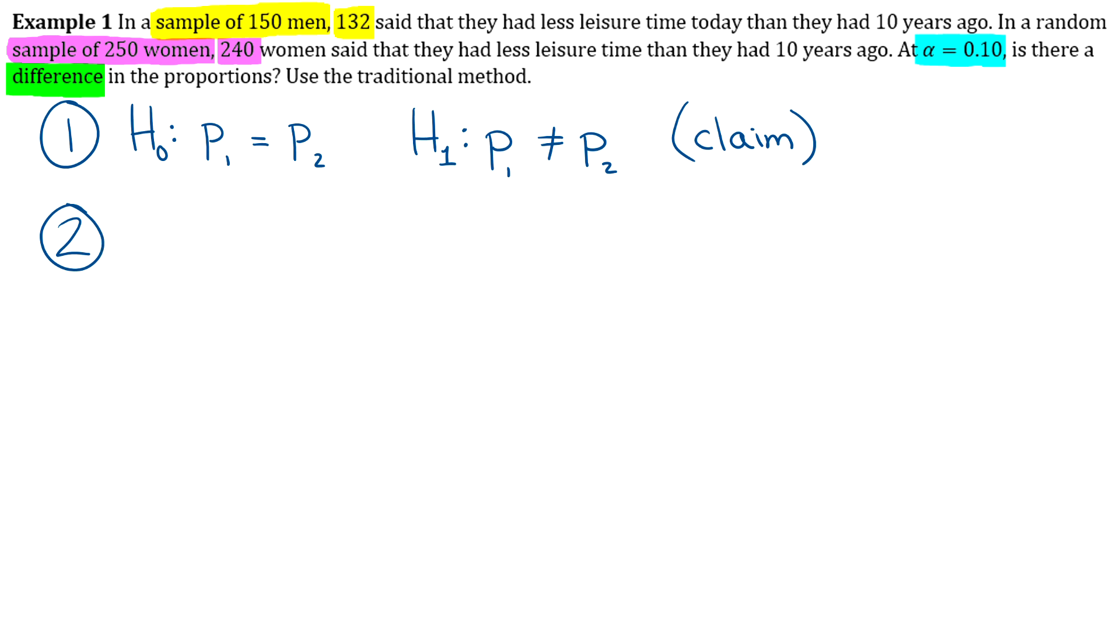Step 2, we need to get our critical values. So you just look at your level of confidence. Alpha is 0.1, and then you look at what tailed test it is. Since it's a not equal to sign in the alternative, this is a two-tailed test. If you go look at that list of common critical values, you'll see that we have two of them: plus or minus 1.65.